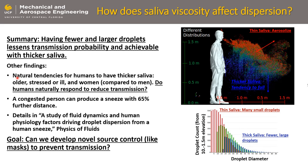We're finding a lot of other things too. When you dig into the dental literature, there are tendencies for humans to have thicker saliva in certain conditions. Somebody who is older, stressed, or ill — or even women compared to men — all have thicker and less saliva, and they're going to be less likely to be transmitting disease. So our ideal super spreader profile is probably a younger male, around 18 years old.